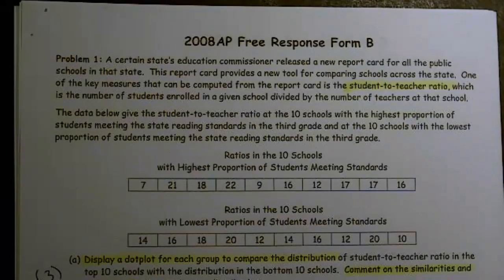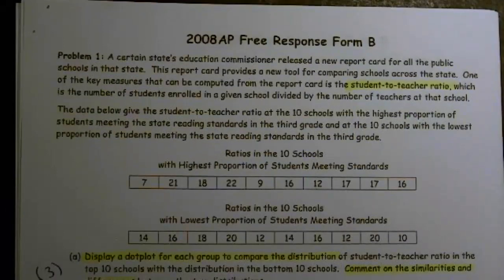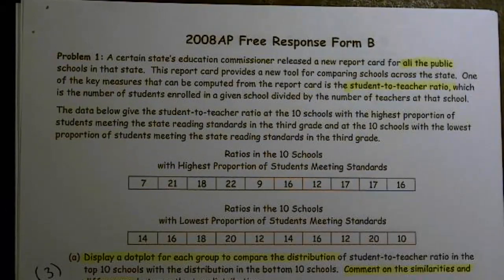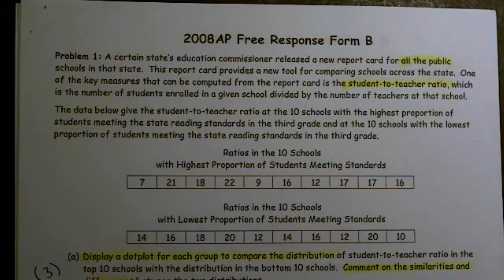This is your Stats Sensei, and we're going over 2008 Form B, Question 1. A certain state's education commissioner released a new report card for all the public schools in that state. The report card provides a new tool for comparing schools across the state. One of the key measures that can be computed in the report card is the student-to-teacher ratio, which is the number of students enrolled in a given school divided by the number of teachers at that school.